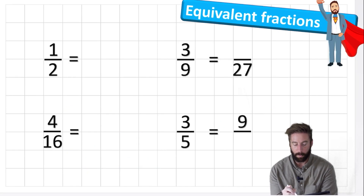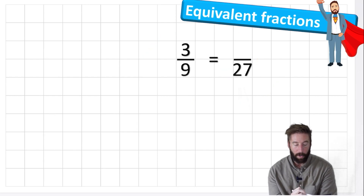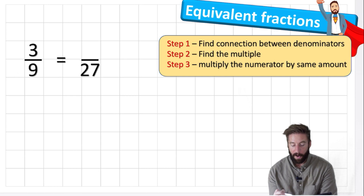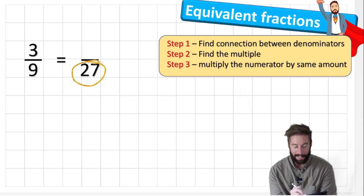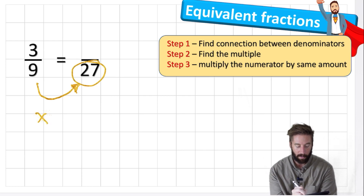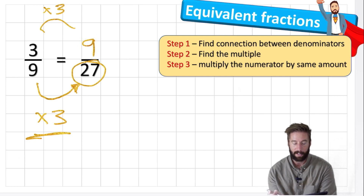Now let's look at a type you might see sometimes — where they already give you the denominator. The steps are slightly different: first, find the connection between the denominators; then find the multiple or divisor; then multiply the numerator by that same amount. I can see straight away that twenty-seven is in the nine times table — nine, eighteen, twenty-seven — so I'm multiplying by three. Whatever we do to the denominator we do to the numerator, so three times three is nine. Three ninths is the same as nine twenty-sevenths.